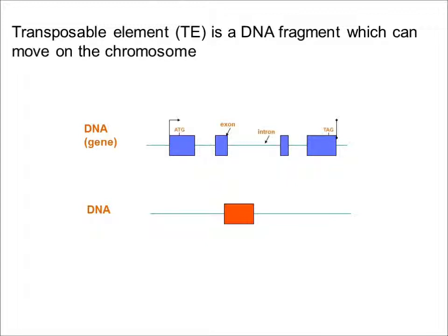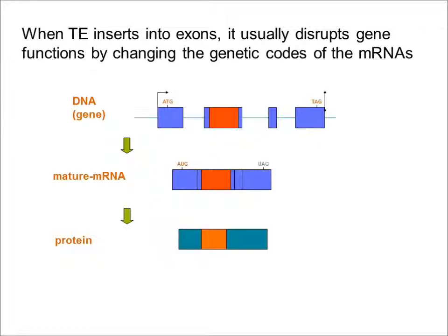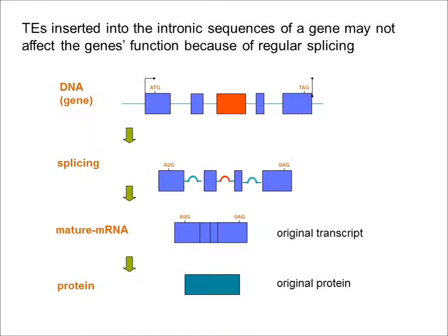A transposable element, TE, is a DNA fragment which can move on the chromosome. When a TE inserts into exons, it usually disrupts gene functions by changing the genetic codes of the messenger RNAs. A TE inserted into the intronic sequence of a gene may not affect the gene's function because of regular splicing.